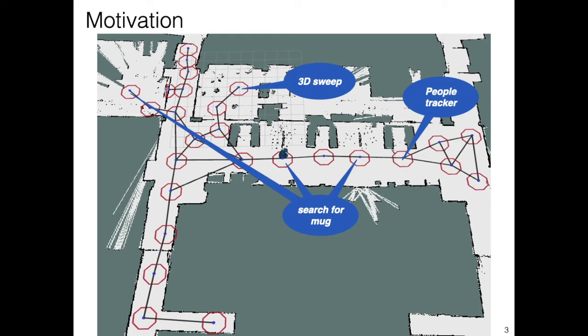Here we see a depiction of a typical planning problem for a mobile service robot. The robot has several tasks to be executed at different locations, for example, performing a 3D camera sweep in order to build a spatial temporal model of the world, or searching for mugs in order to clear them and move them to the kitchen.